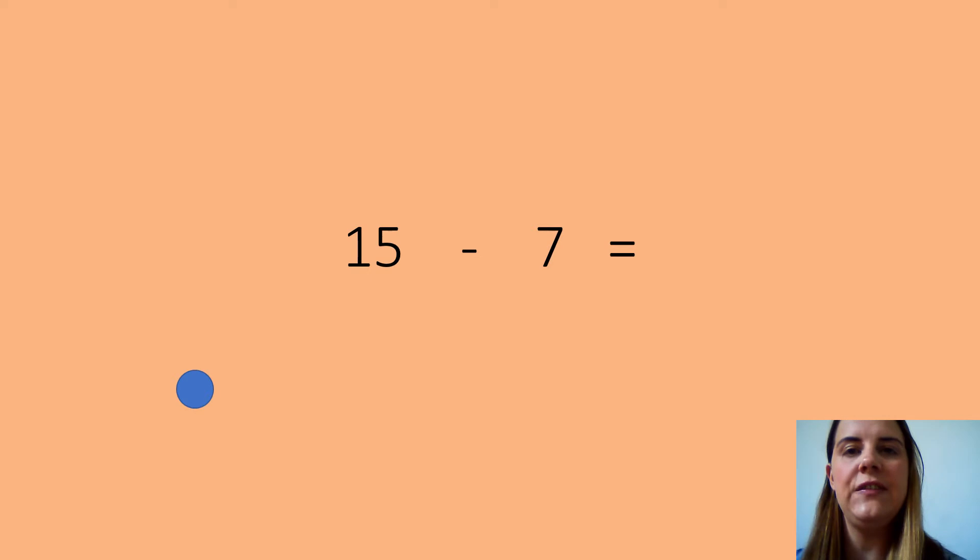So here we go. Your first number sentence is 15 take away 7 equals. Can you write this down please on your piece of paper? If you need more time to write down the sentence, draw the circles, and find the answer, just pause the video where you need to.